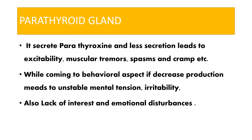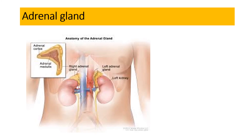The parathyroid gland secretes parathyroxine. Decreased secretion leads to excitability, muscular tremors, spasms, and cramps. In terms of behavioral aspects, decreased production leads to unstable mental tension, irritability, lack of interest, and emotional disturbance — confirming that these hormones are directly related to our behavior.